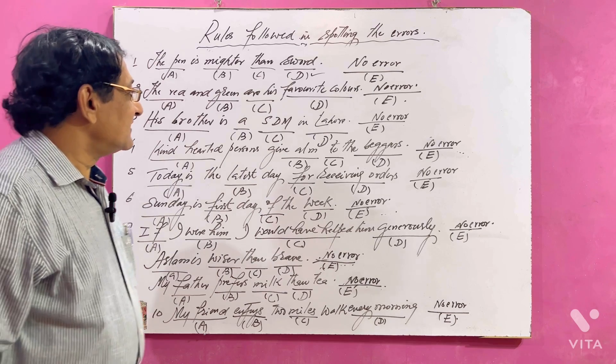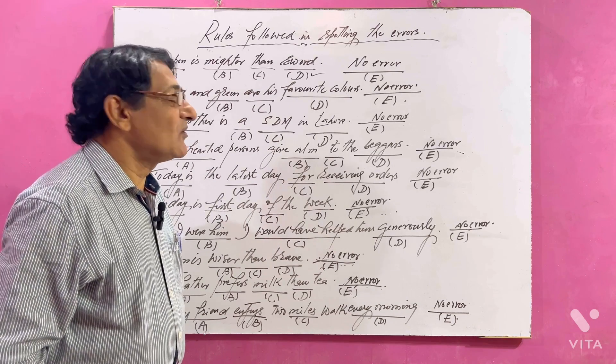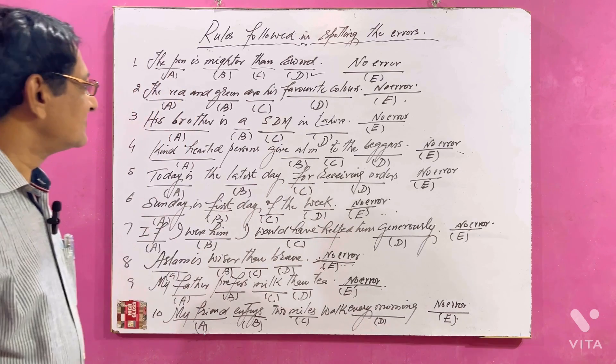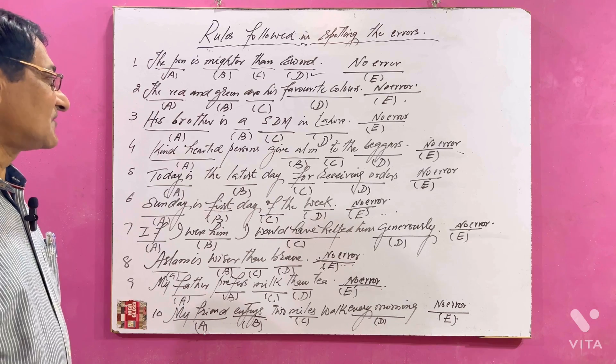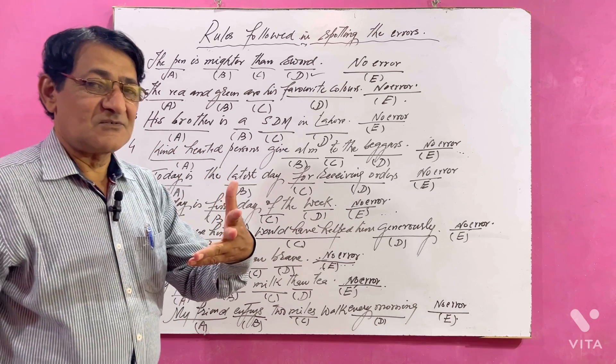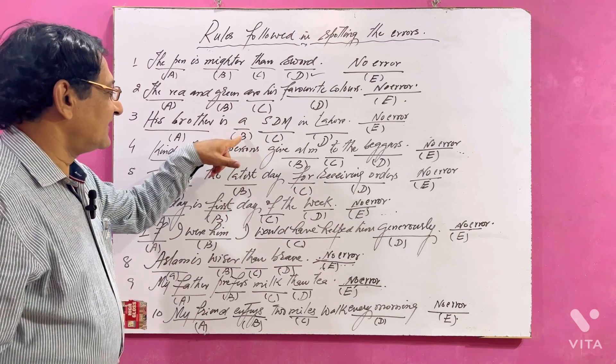Number three: His brother is a SDM in Lahore. Now look for the vowel sounds - SDM, vowel sound. It means here's error. We write down 'an SDM' according to vowel sound.